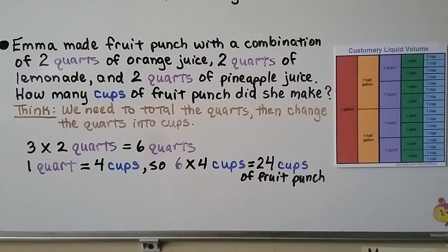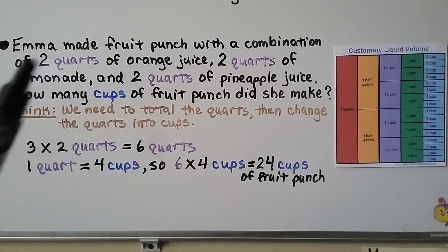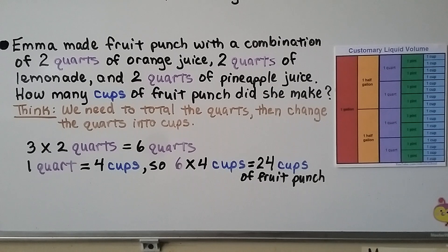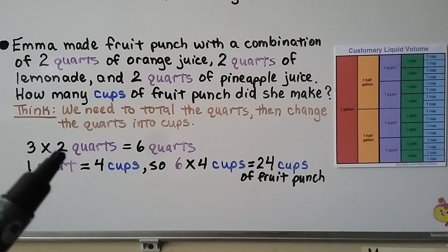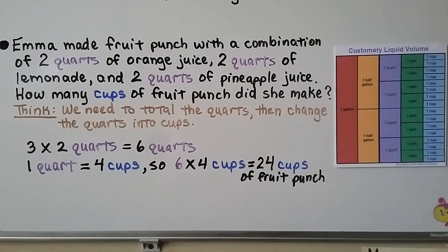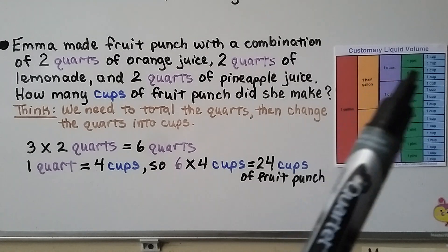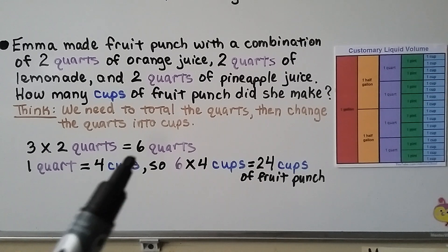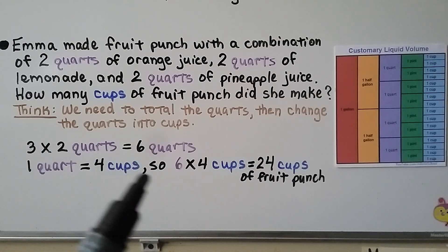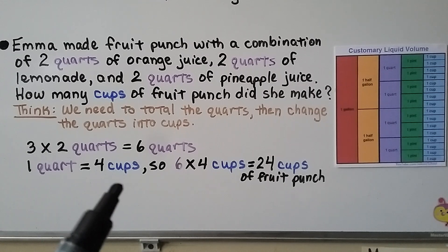Emma made fruit punch with two quarts of orange juice, two quarts of lemonade, and two quarts of pineapple juice. How many cups of fruit juice did she make? We total the quarts: three times two quarts equals six quarts. One quart equals four cups, so six quarts times four cups equals 24 cups of fruit punch.